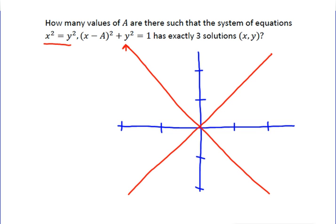The other equation is the classic example of a circle. It has two specific qualities we know: it has a radius of 1 and a y-coordinate of 0 for its center. So the center is going to be along the x-axis, and you need to find a point with radius 1 where you're going to have exactly three solutions.